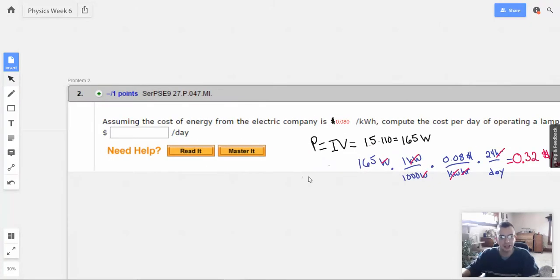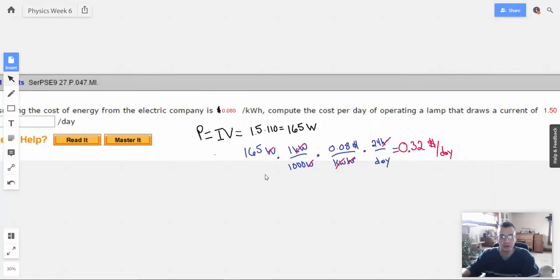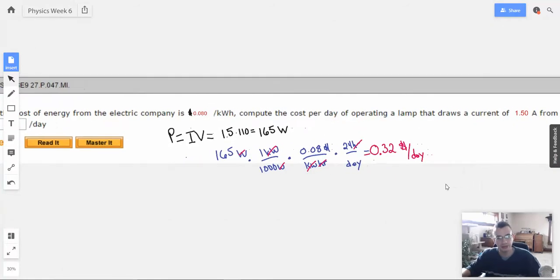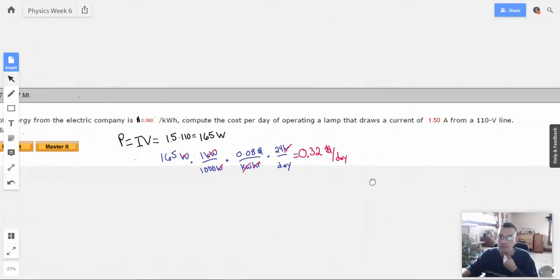The cost of energy is 0.08. Compute the cost per day of a lamp. 1.5.